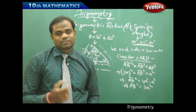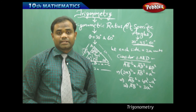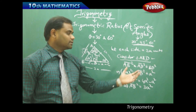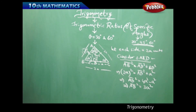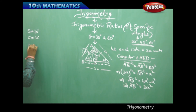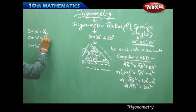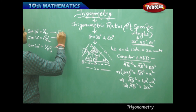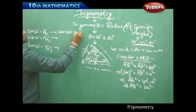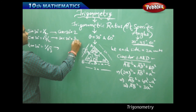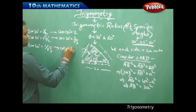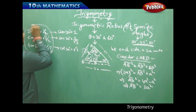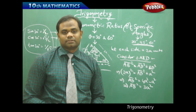Now that we have sin 30 = 1/2, cos 30 = √3/2, and tan 30 = 1/√3, we get the reciprocal ratios: cosecant 30 = 2, secant 30 = 2/√3, and cot 30 = √3. This completes all six trigonometric ratios for 30°.